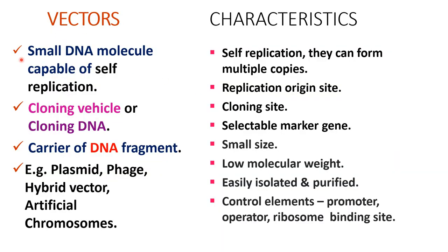Vectors are small DNA molecules capable of self-replicating, also called cloning vehicle or cloning DNA, and act as carriers of DNA fragments. Examples include plasmid, phage, hybrid vector, and artificial chromosome. As I already mentioned, they are self-replicating and can form multiple copies.